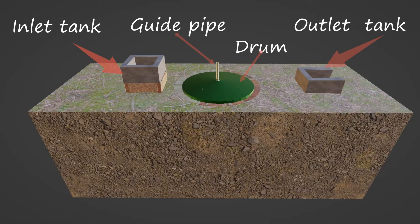The gas holder floats up and down on the central guide pipe. It can be rotated to break the scum formed on the surface of the slurry in the digester. Scum is a layer of light material which floats on top of the slurry and prevents biogas from moving up.